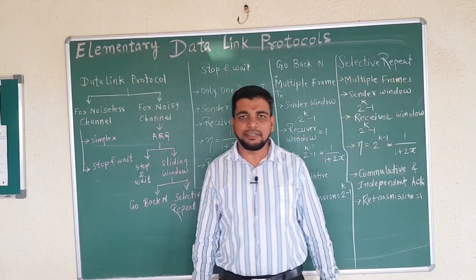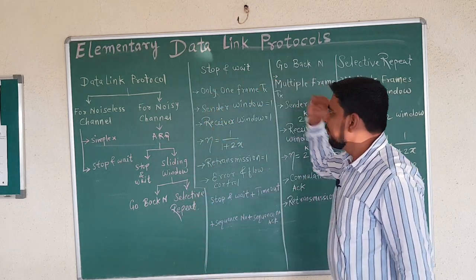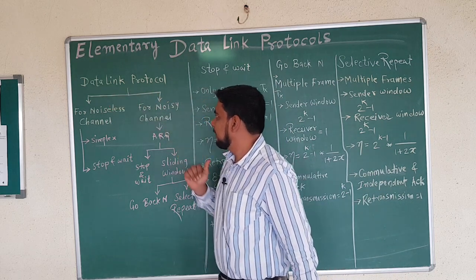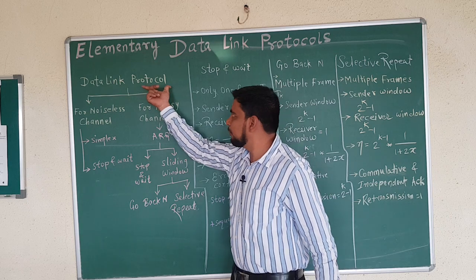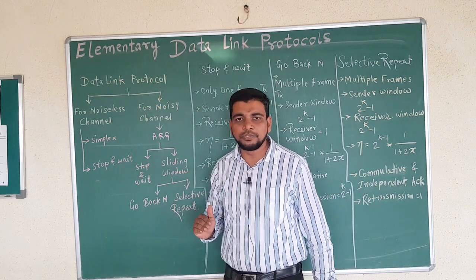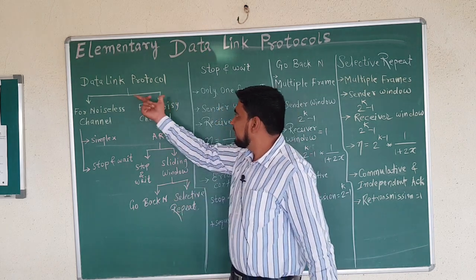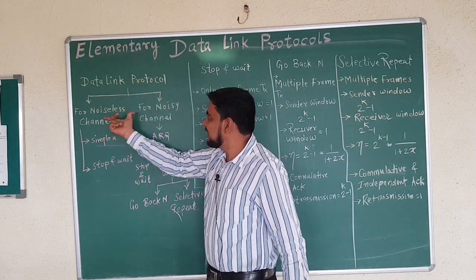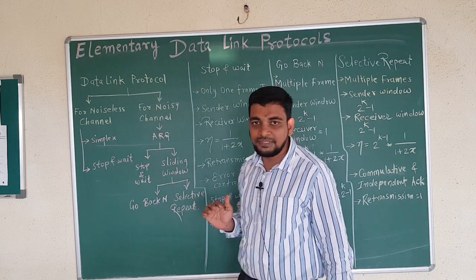The topic is elementary data link layer protocols. In the elementary data link protocols, we are going to study the different protocols used in the data link layer. First, we should understand what a protocol means. A protocol is nothing but the set of rules between two communicating parties on how communication is to proceed. These data link layer protocols are broadly classified into two categories: noiseless channel and noisy channel.